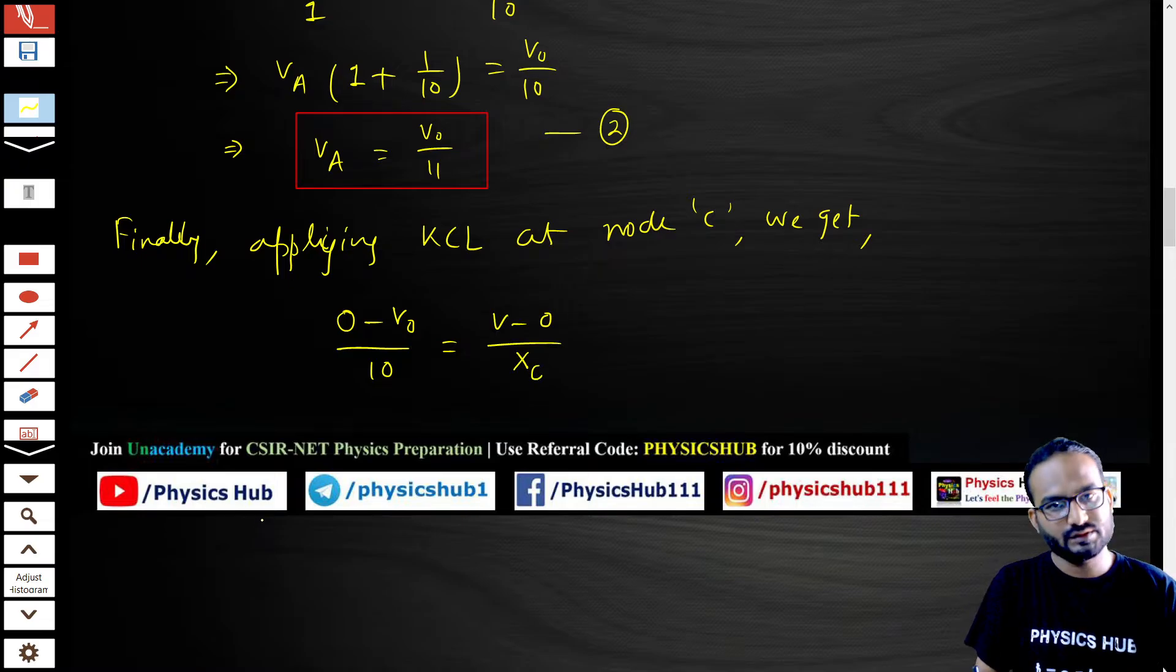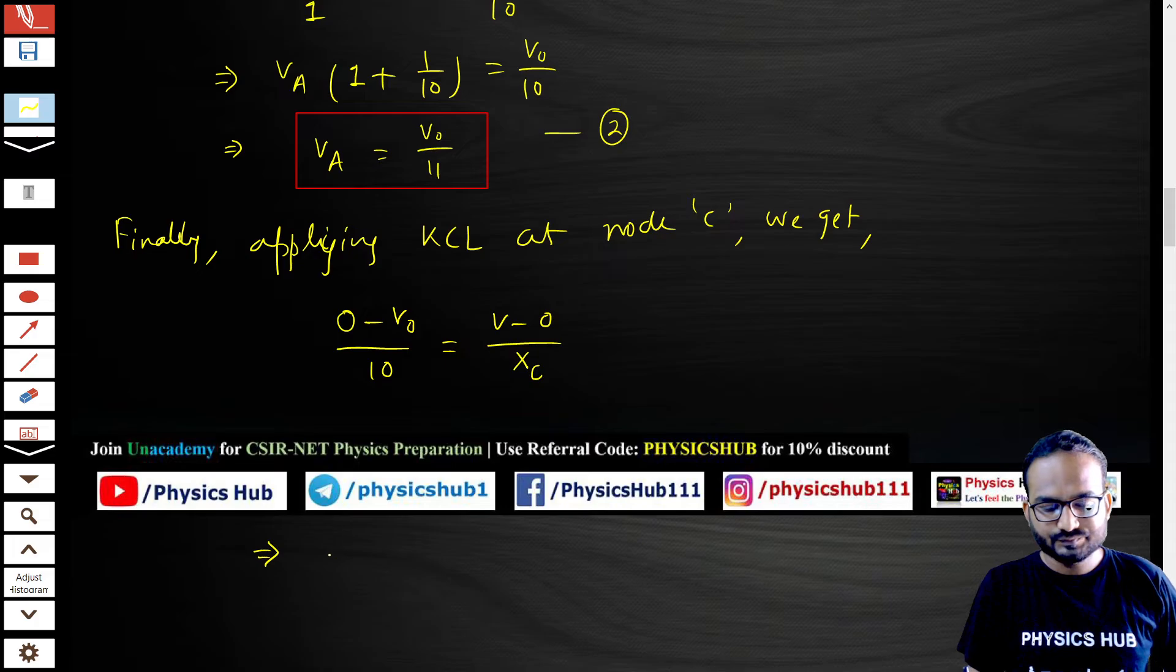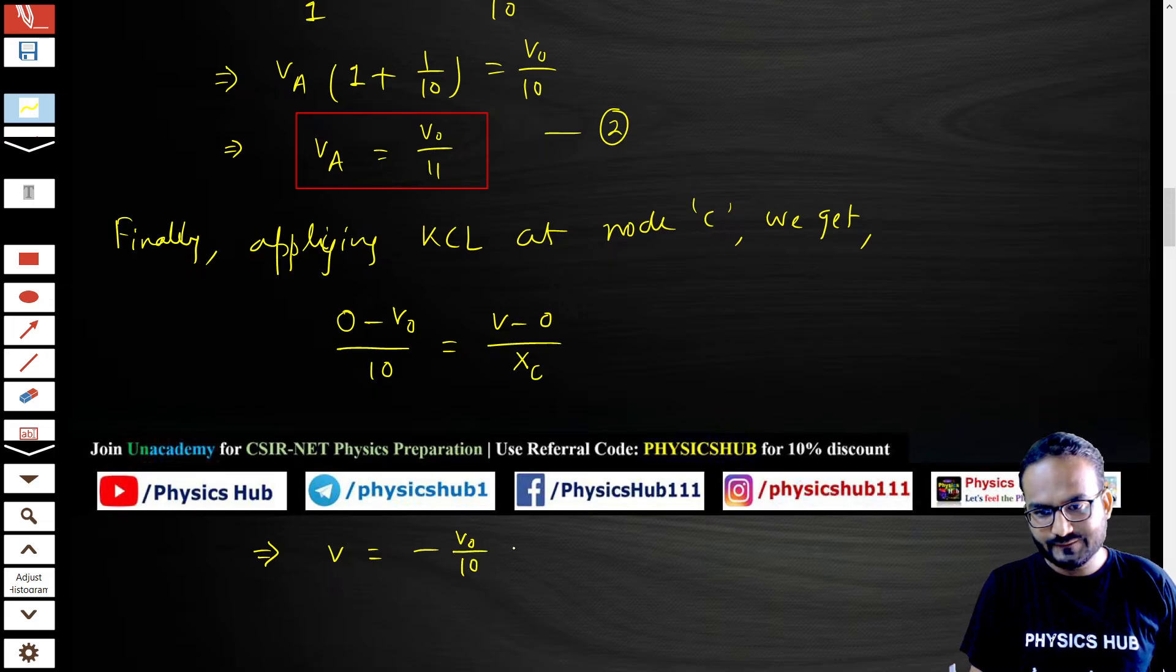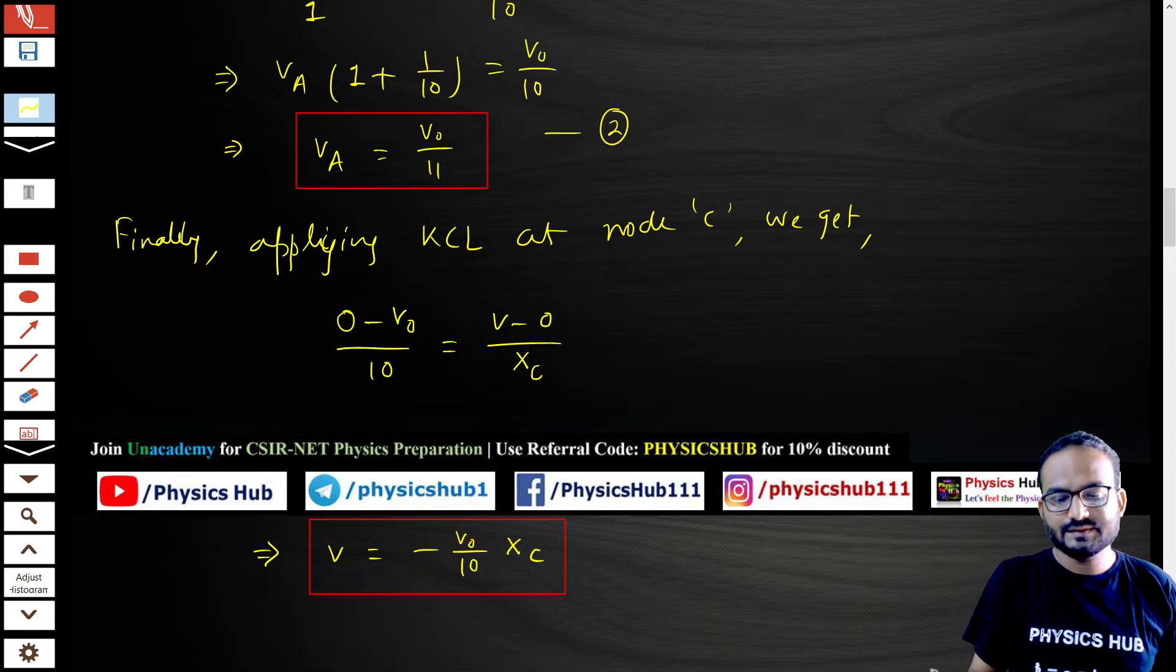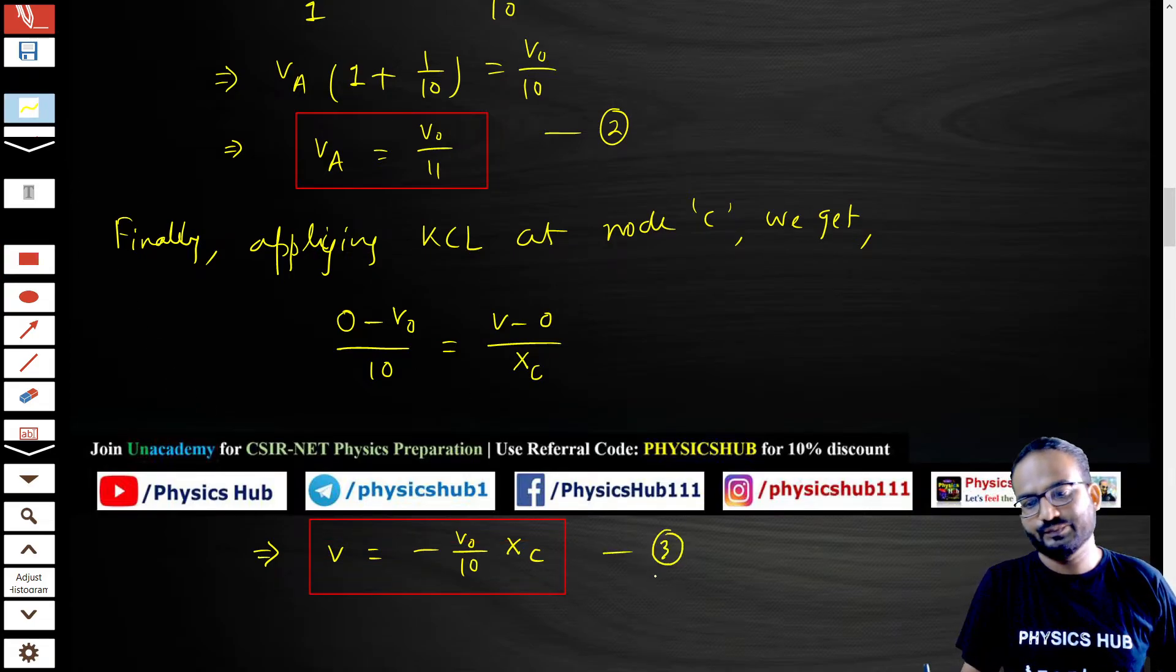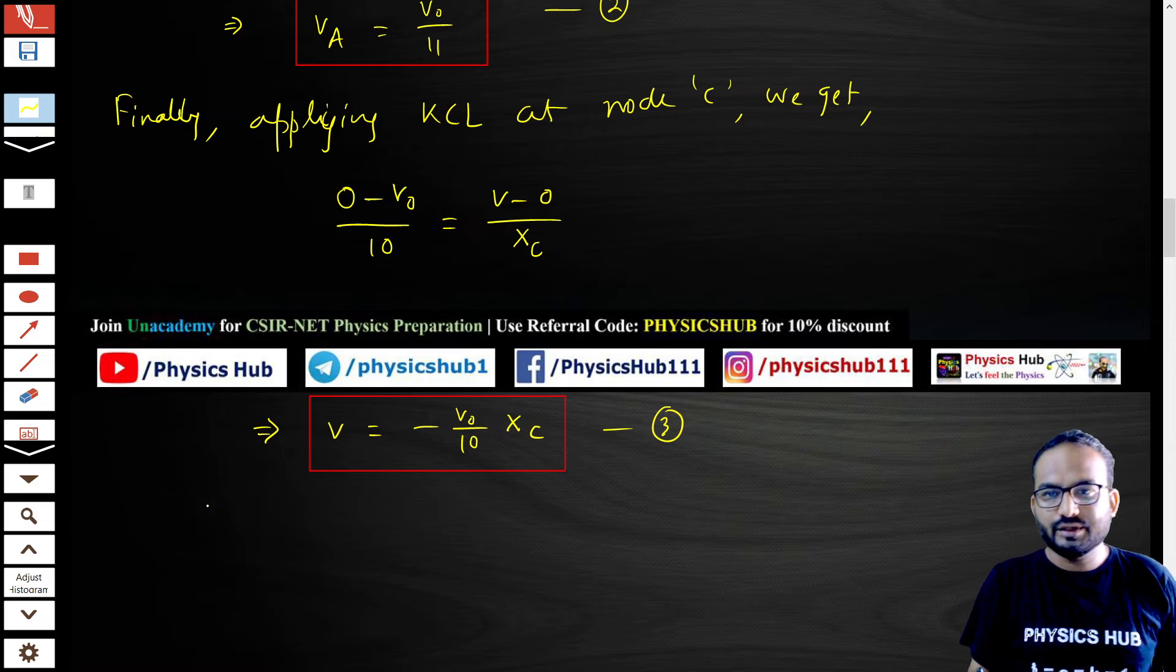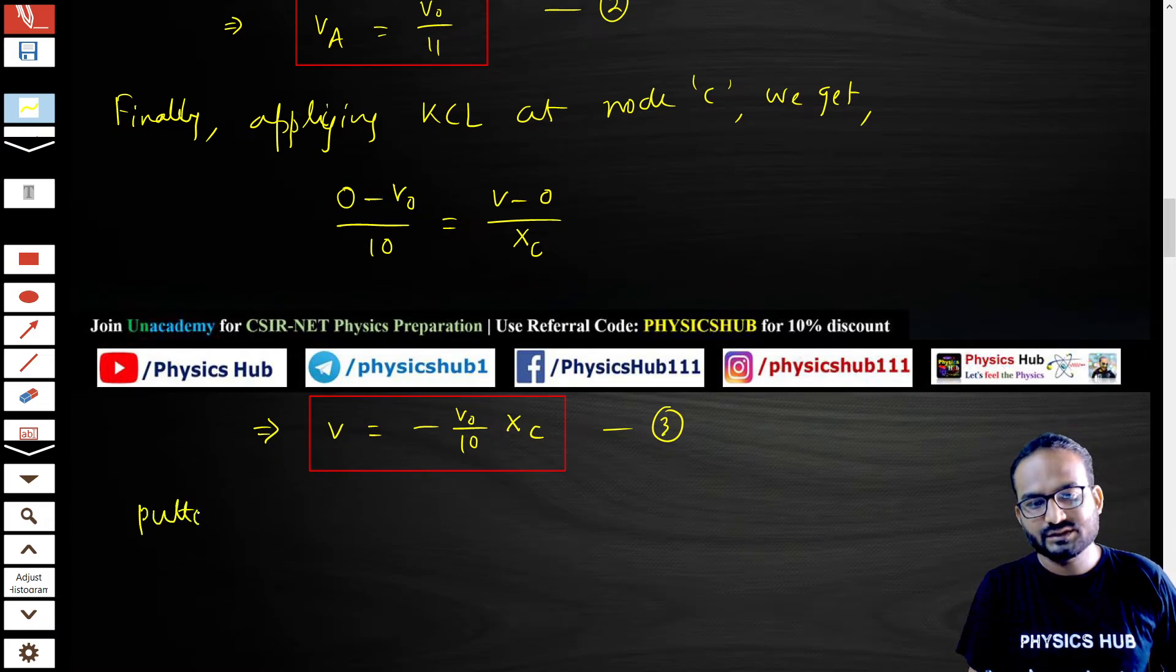The reactance we have to consider: this equals V minus 0 by the resistance equivalent to the capacitance, denoted by X_C. From here you can get the value of V: V equals minus V_naught upon 10 times X_C. We are getting the third equation by applying KCL to the third node.